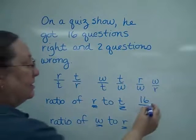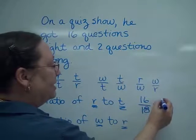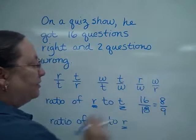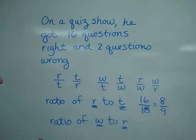And of course since this is a fraction, you must always simplify as far as you can go. In this case, reducing by 2's gives me a ratio of 8 ninths.